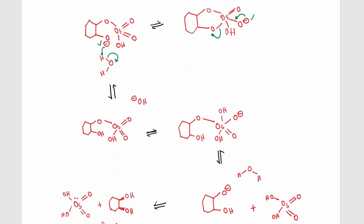Now we will form this particular intermediate, and another hydroxyl ion will come and attack the osmium atom in order to form a bond. This double bond will break and leave the electrons on this oxygen atom. The negative charge on this oxygen atom will try to reform a double bond here and can kick off the OH group here. Or this bond can break and leave the electrons on this oxygen atom.